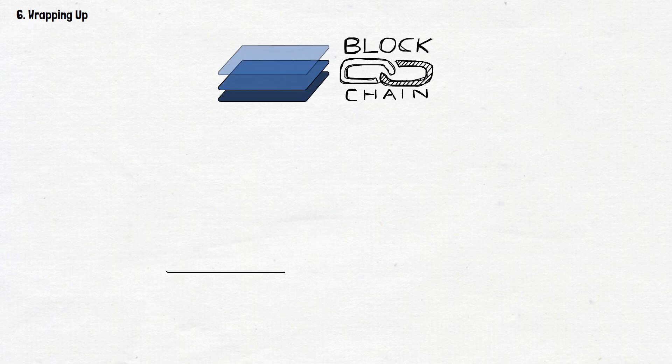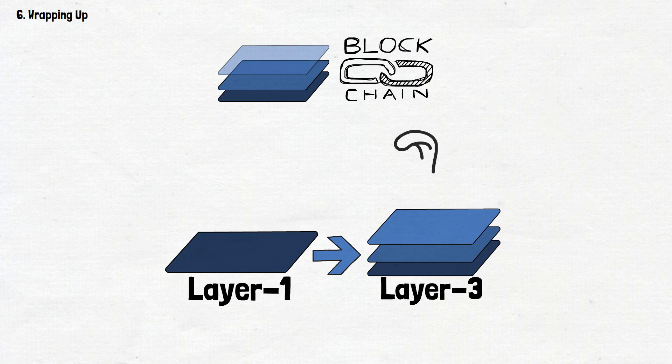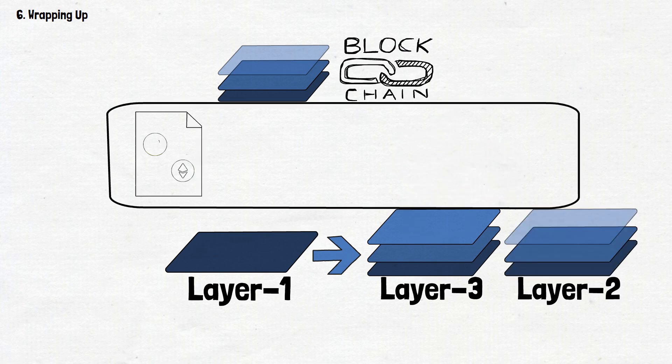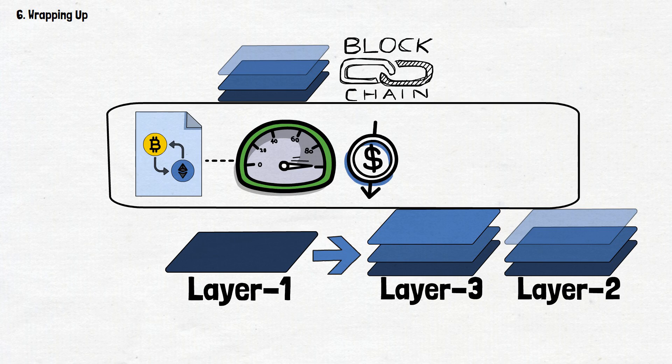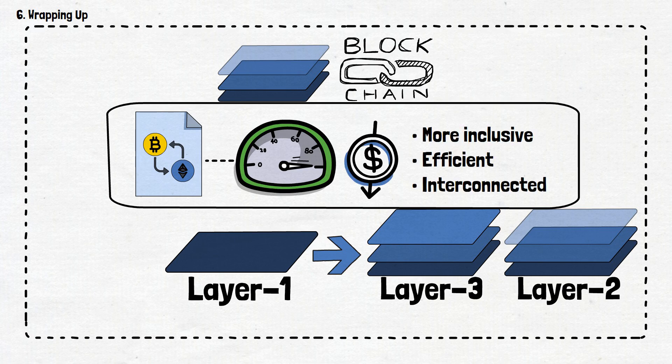And that wraps up our journey through the layers of the blockchain universe. From the foundational Layer 1 to the innovative horizons of Layer 3, we've unraveled the mysteries and complexities of these scaling solutions. As we conclude this adventure, remember that Layer 2 and Layer 3 aren't just about making transactions faster and reducing fees. They represent the ingenious efforts to create a more inclusive, efficient and interconnected blockchain ecosystem.